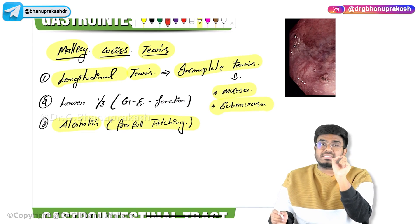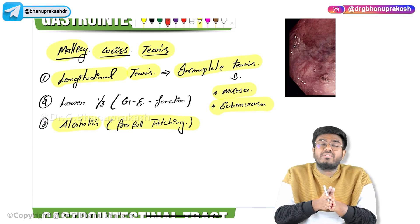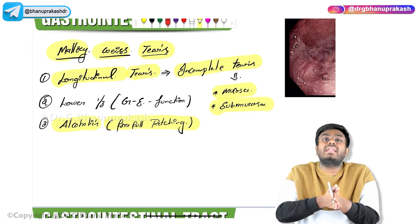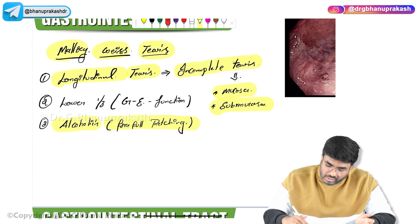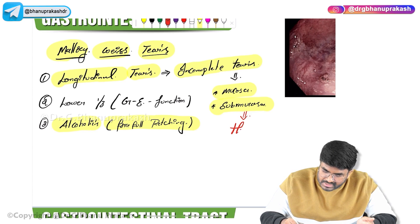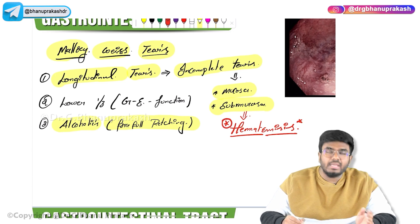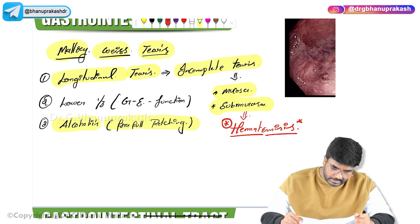When the submucosal vessels are involved and damaged in this tear, there will be hematemesis — bloody vomiting — because of the involvement of the vessels in the submucosa.